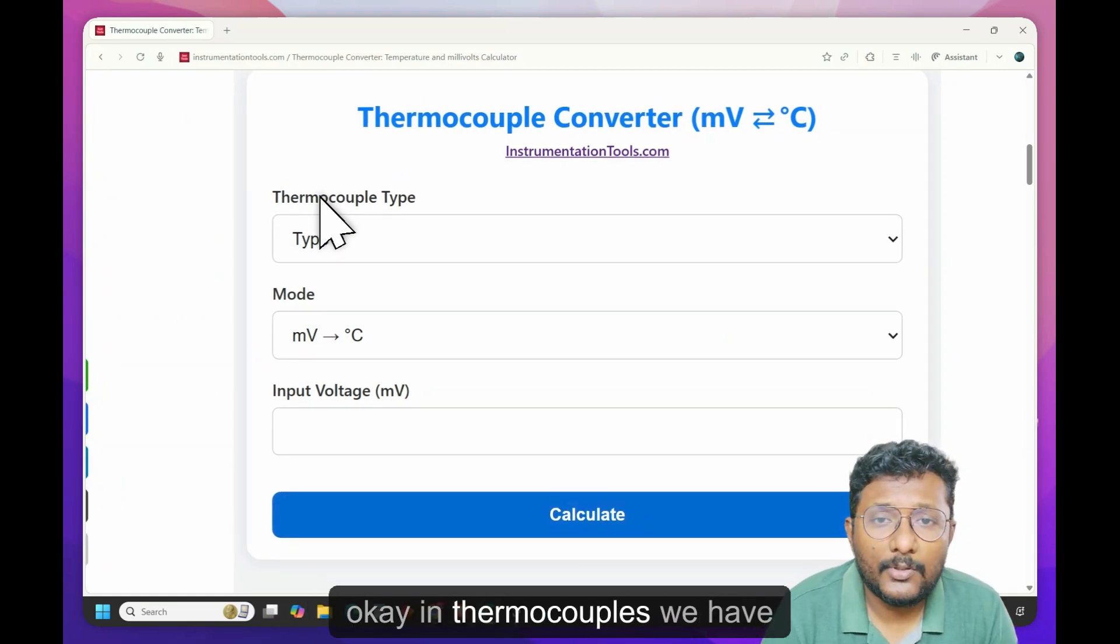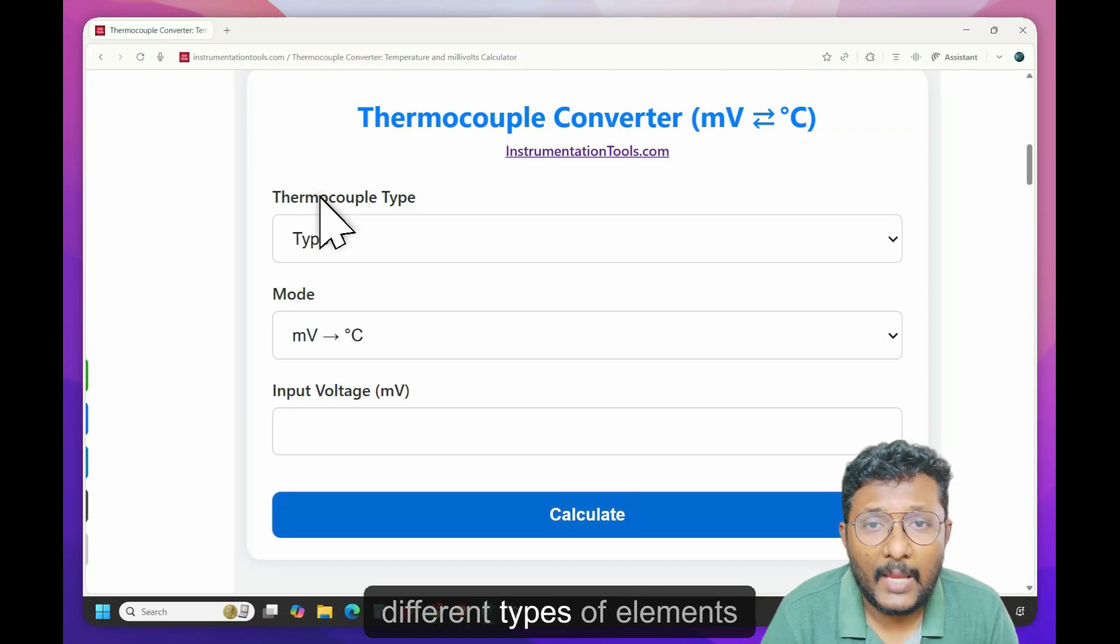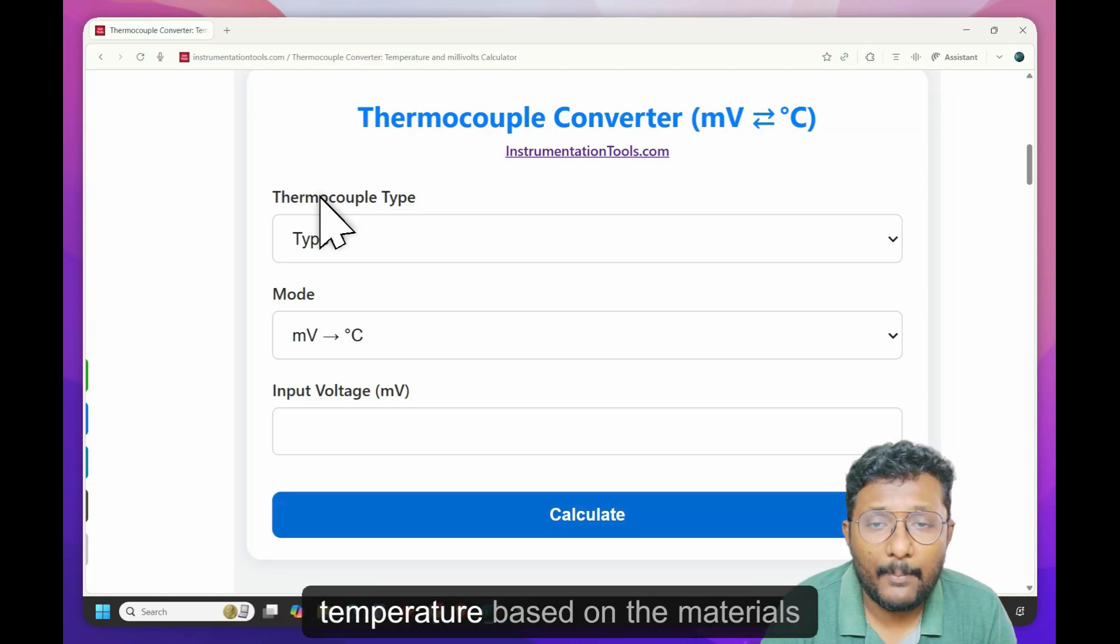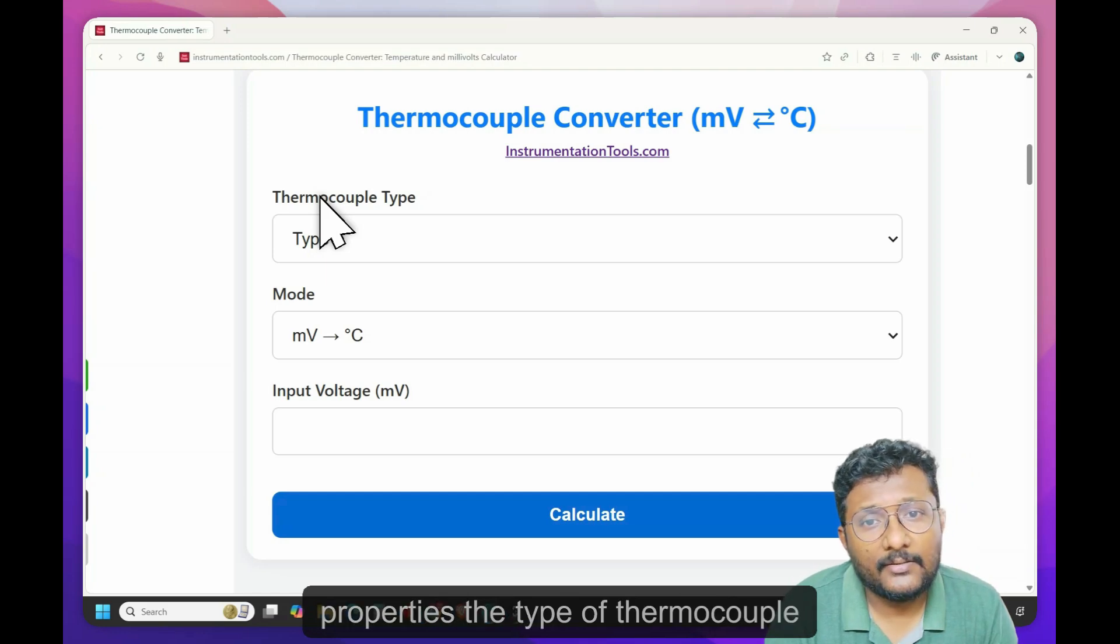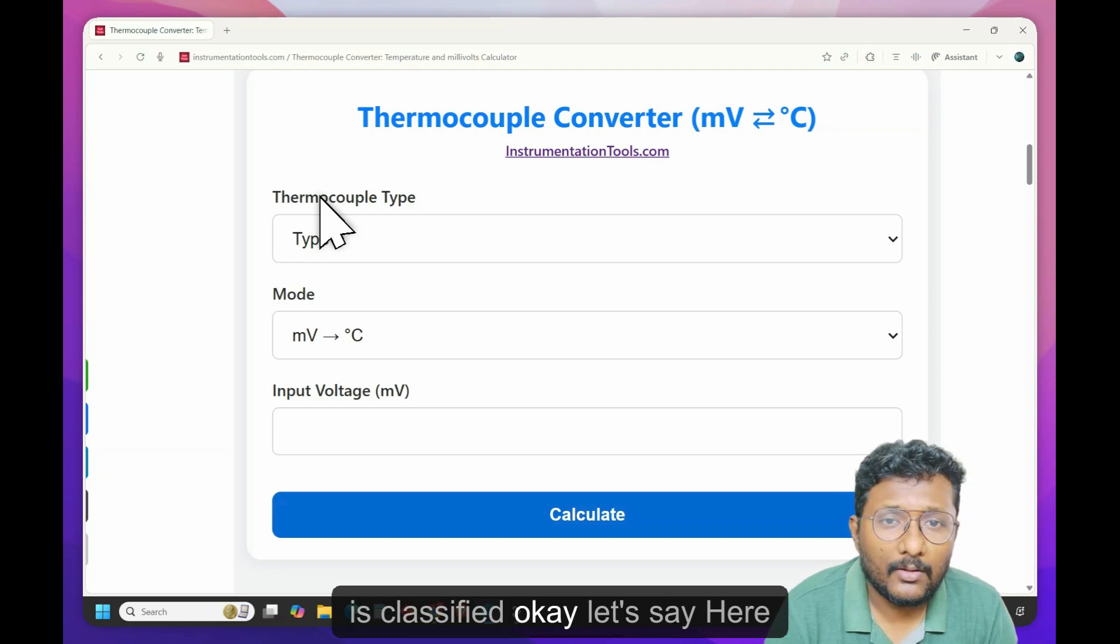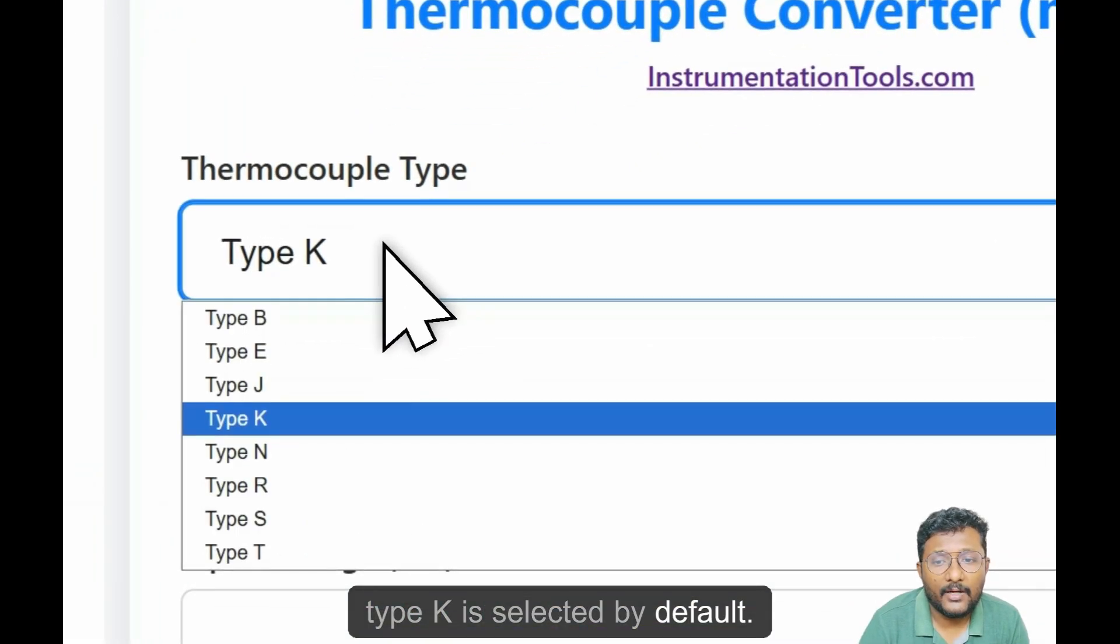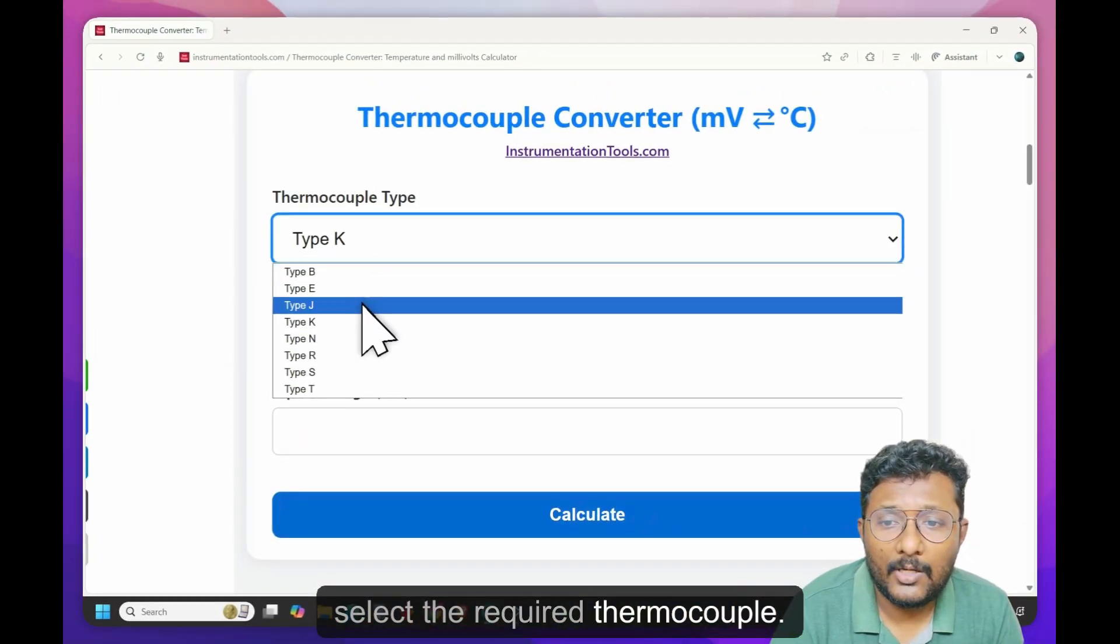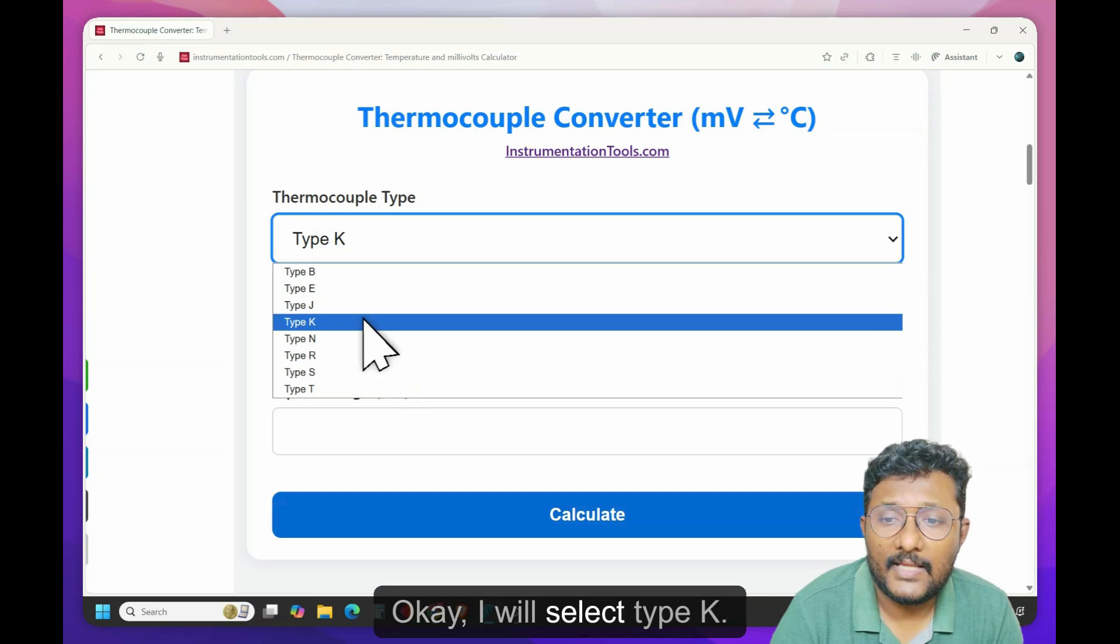In thermocouples, we have different types of elements available for measuring the temperature. Based on the materials properties, the type of thermocouple is classified. Let's say here type K is selected by default. You can click here and you can select the required thermocouple. I will select type K.